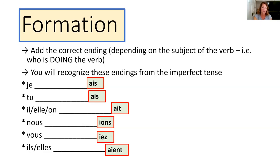Pronunciation-wise: je, tu, il/elle/on, and ils/elles — they're all pronounced the same. So it's just 'ay'. Even though the ils/elles form looks like it would be pronounced differently, it's not — it's still just 'ay'. And then nous is 'ee-oh', and vous is 'ee-ay'.